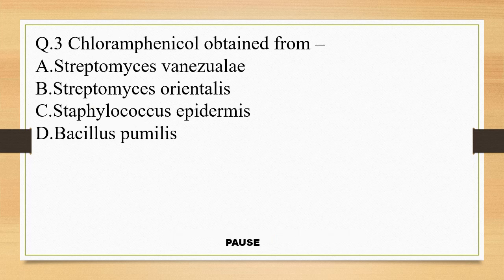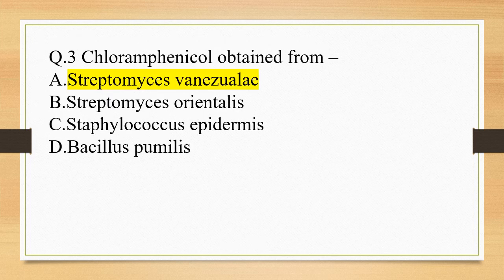Question 3. Chloramphenicol is obtained from: option A, Streptomyces venezuelae; option B, Streptomyces orientalis; option C, Staphylococcus epidermis; and option D, Bacillus pumilus. And the right answer is option A, Streptomyces venezuelae.